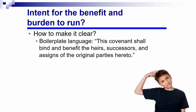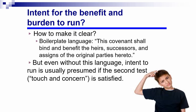Don't be put off by that archaic language about heirs, successors, and assigns. That's just a fancy way of saying the future owners of the parcels of land affected. This boilerplate language refers to both the burdens and the benefits, since it says the covenant shall 'bind and benefit.' Both the burdens and benefits are intended to run to future owners of the respective burdened and benefited parcels. Even if that language isn't in the covenant, courts are usually willing to presume the intent is satisfied if the touch-and-concern requirement is met.